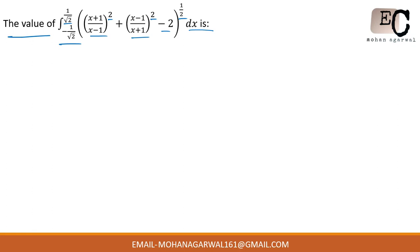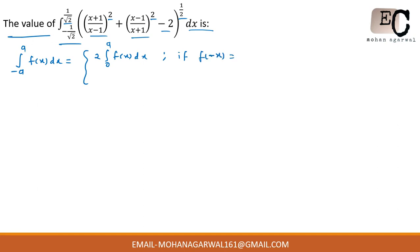First, let's use the property: the integral from -a to a of f(x) dx equals 2 times the integral from 0 to a of f(x) dx, when f(-x) equals f(x) (even function). And it equals 0 when f(-x) equals -f(x) (odd function). These are the two conditions.